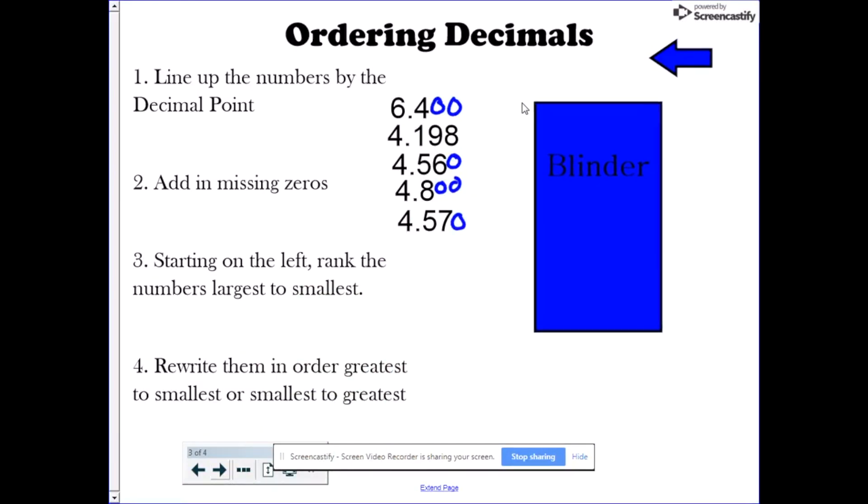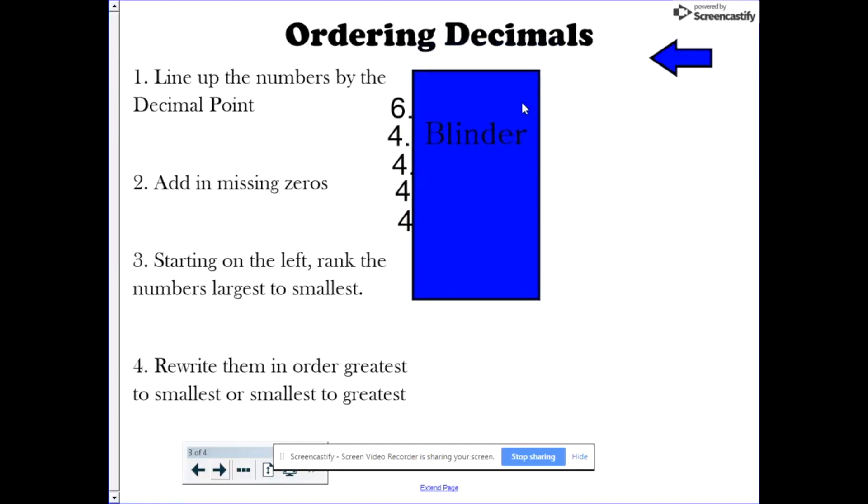Then, we're going to start on the left-hand side, meaning the ones place in this case, and start ranking them. What's the biggest number we have up here? Well, the 6 is the biggest, so therefore, we're going to write a 1 next to it.